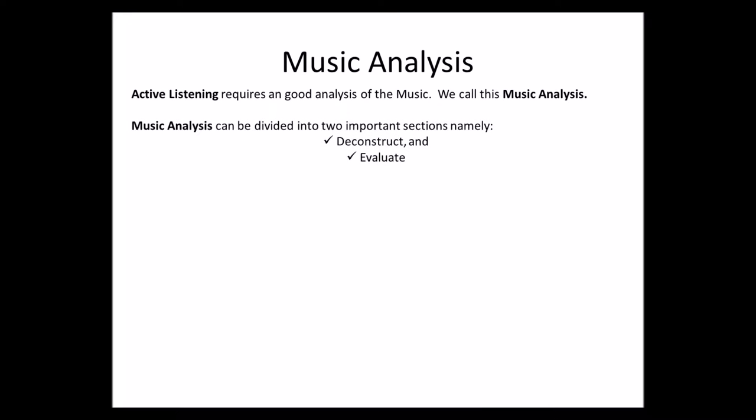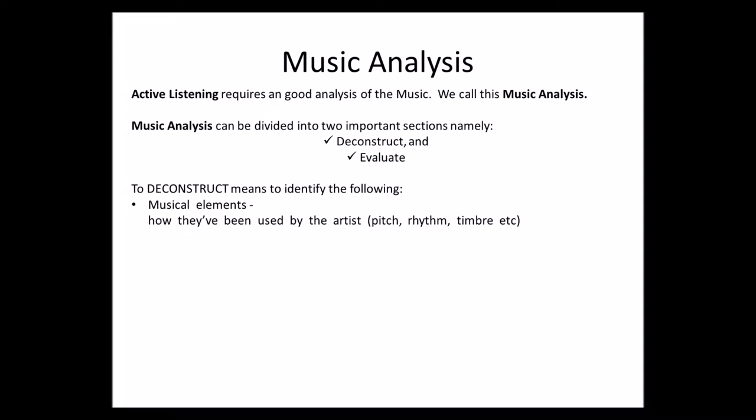Music analysis can be divided into two important sections: deconstruct and evaluate. To deconstruct means to identify musical elements and how they have been used by the artist — pitch, rhythm, timbre — which we have discussed in elements of music. It also means identifying compositional devices such as repetition, sequence, inversion, randomness, serialism, and so on.